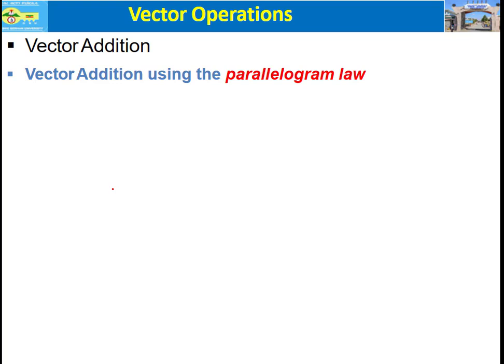Now let us see how to add two vectors — vector addition. One of the popular methods to add two vectors is to use the parallelogram law. In this case we have to use certain rules to determine the resultant. First, let us see how to construct the parallelogram.